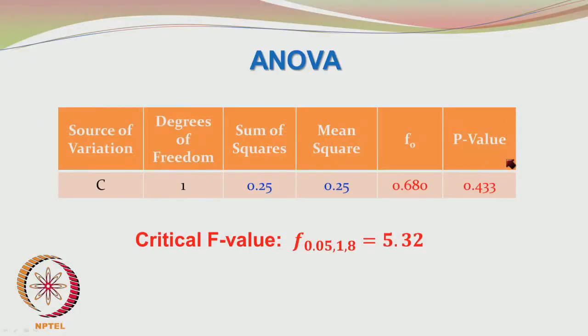On the other hand, the null hypotheses which said factor A is not important and factor B is not important are rejected because of the F test. You also look at the P value — for factor C the P value is pretty high at 0.433, so the null hypothesis would stand to be accepted. The critical probability value was 0.05, and any P value lower than 0.05 would lead to rejection of the null hypothesis.